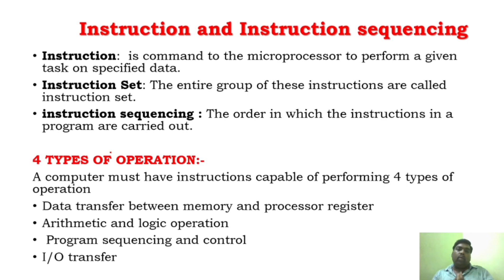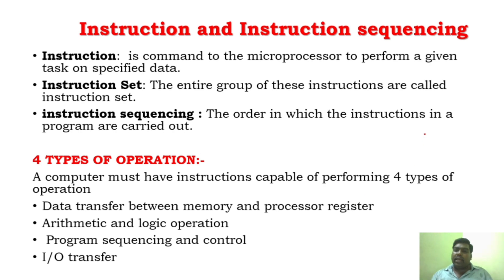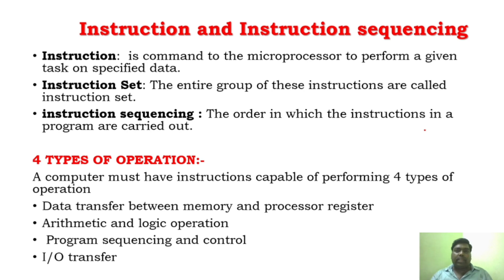Before starting, let's understand what an instruction is. An instruction is a command to the microprocessor to perform any particular given task. And an instruction set is nothing but a group of instructions. You know that a computer will work based upon the instructions which are stored in the memory. That particular group of instructions is an instruction set. A program is a group of instructions — we can also call it an instruction set.